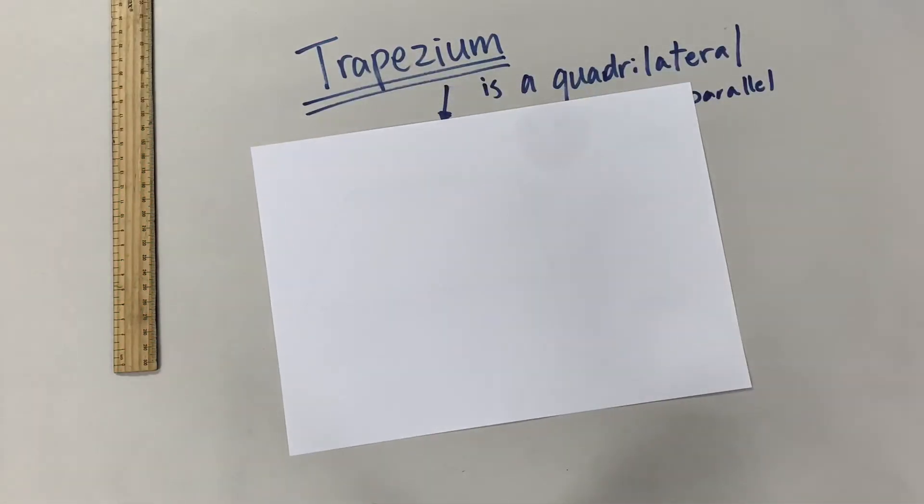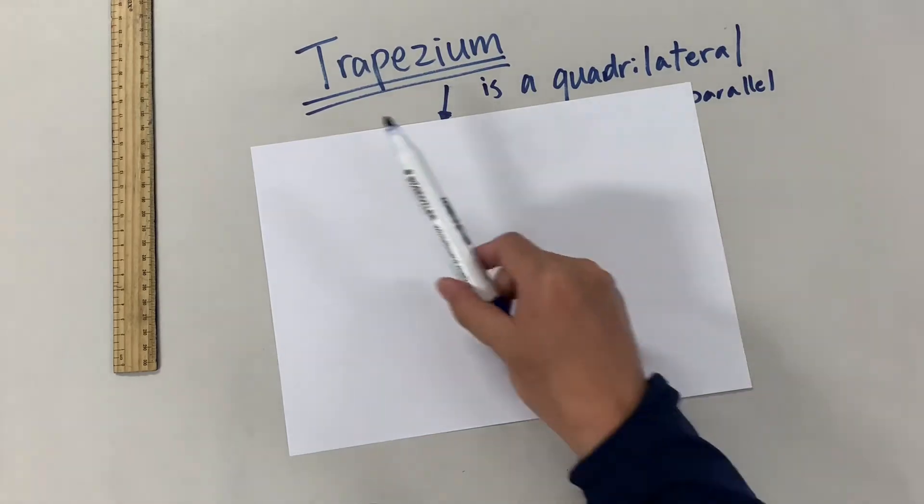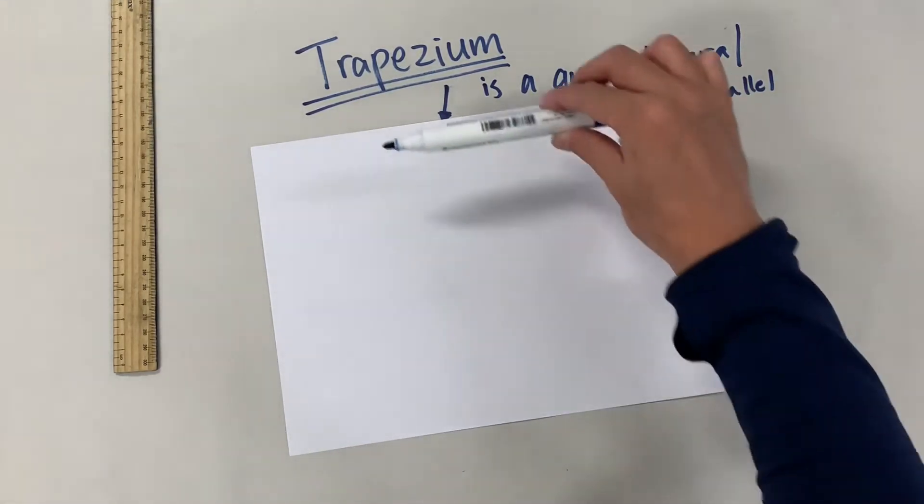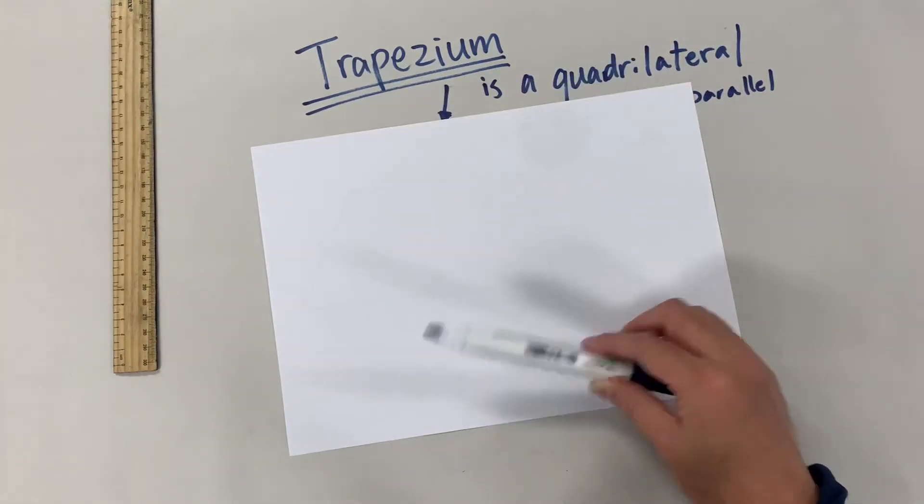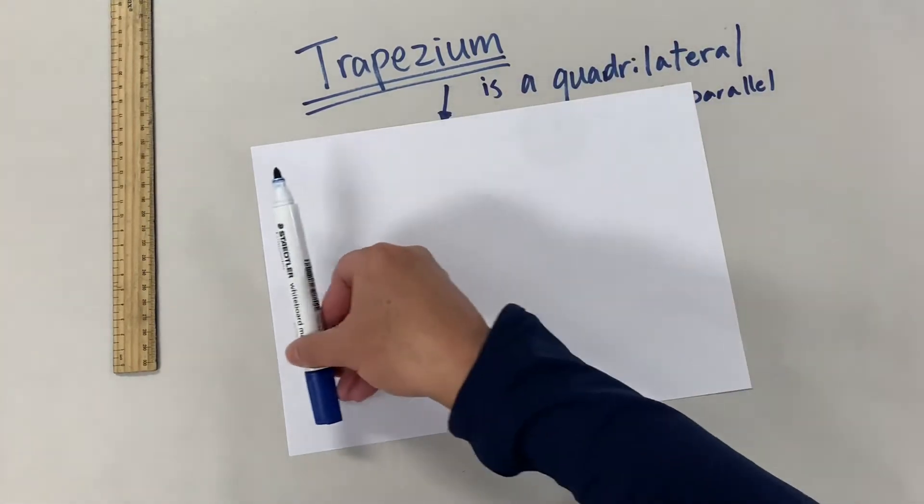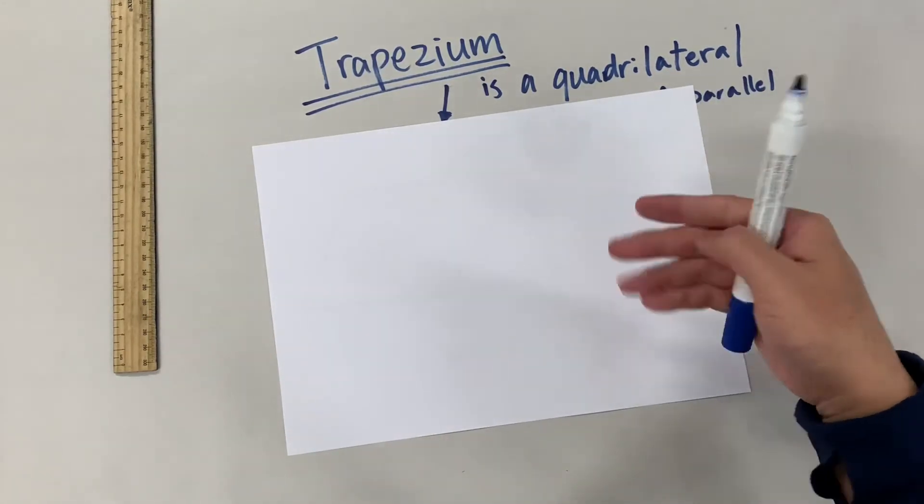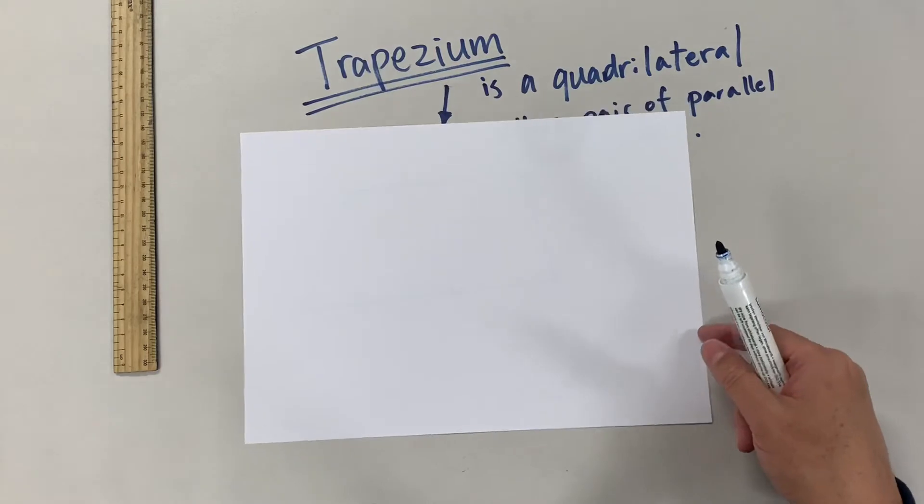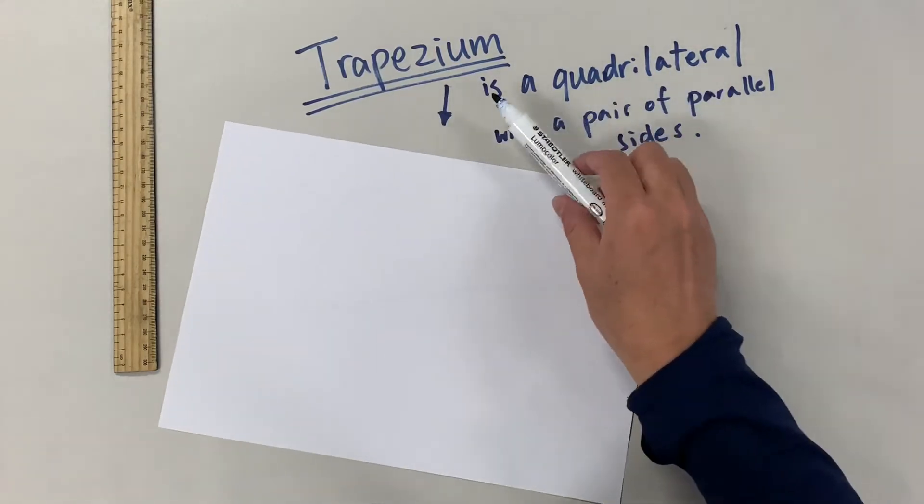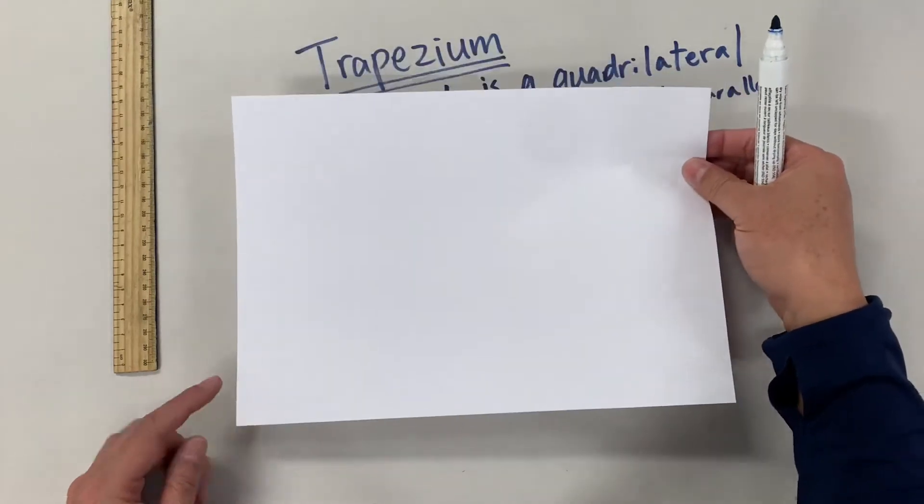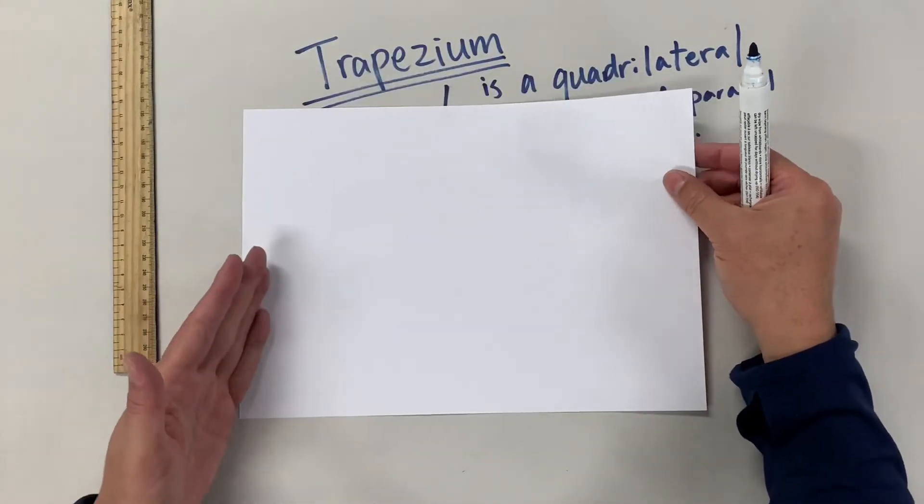So it's a rectangle. I can see there's parallel sides. A pair of parallel sides here or there's another pair of parallel sides here. Now is this a trapezium? Yes it is because it has at least one pair of parallel sides. This is in the trapezium family.